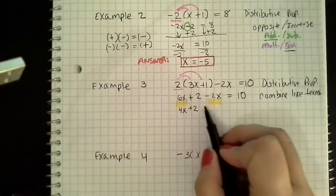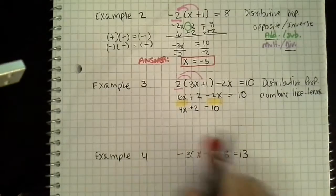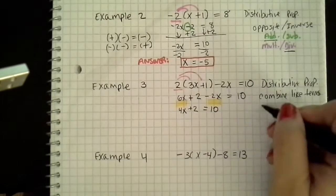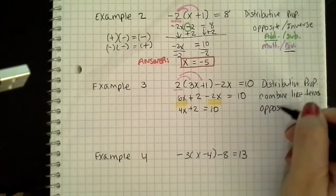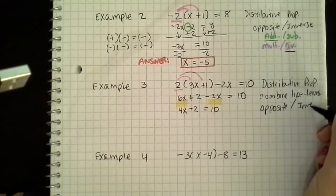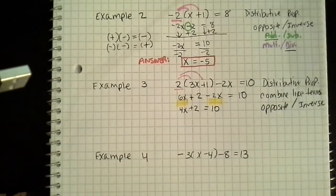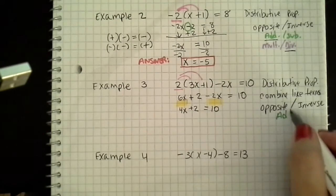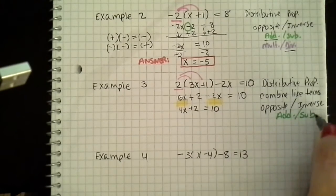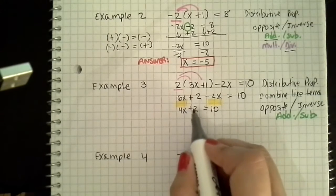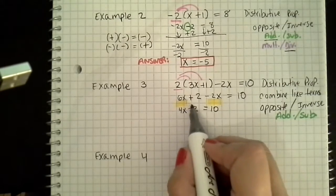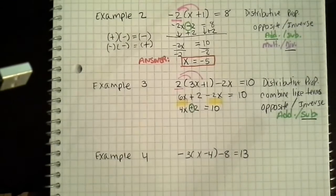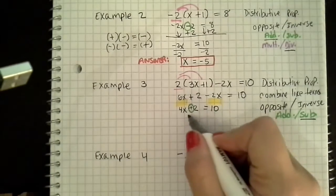Bring the 2 down, I didn't do anything to it. Bring the equal. Bring the 10. So I don't need to combine like terms anymore. Therefore I move straight on to opposites and inverse. And remember, I begin with my add or subtract. I look at this — am I adding or subtracting a constant number? I'm adding 2. So the inverse of adding is going to be subtraction. So I need to subtract 2 from both sides.